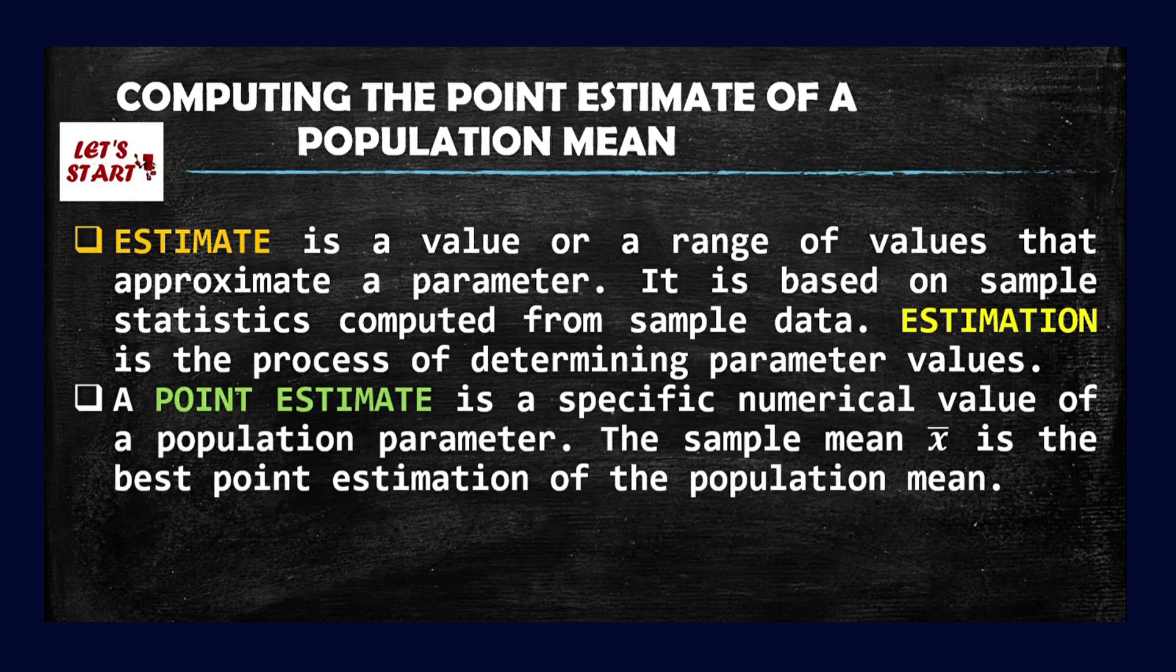A point estimate is a specific numerical value of a population parameter. When you say population parameter, these are numbers that describe or tell something about our entire population or the entire group. Any number that tells something about the population is called a population parameter. For example, the size of the population—that is one example of population parameter.